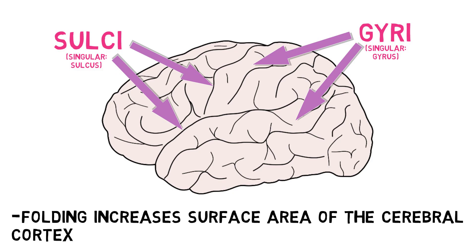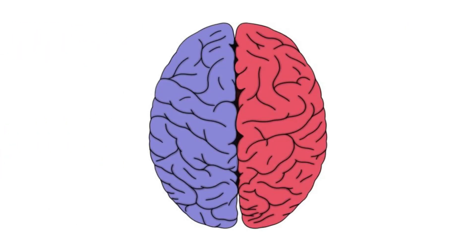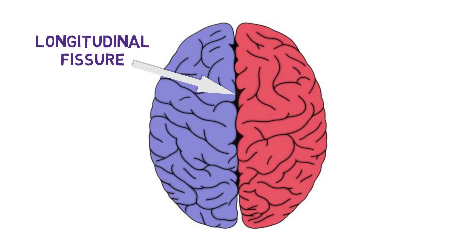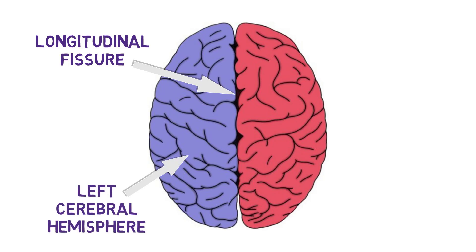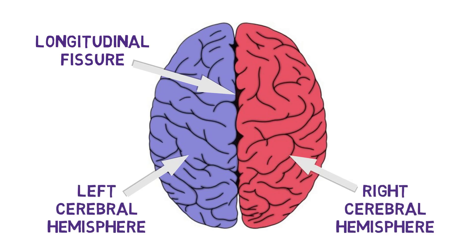In this video, I will discuss some of the most prominent sulci and gyri, although this will be an overview and won't cover all of the sulci and gyri found throughout the brain. Perhaps the most recognizable sulcus is the longitudinal fissure, the deep groove that runs along the midline of the brain and separates the left and right cerebral hemispheres.